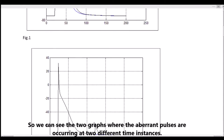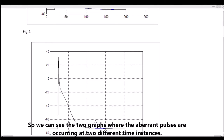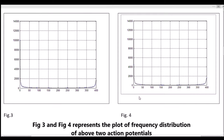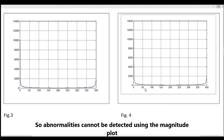We can see the two graphs where the aberrant pulses are occurring at two different time instants. Figures 3 and 4 represent a plot of the frequency distribution of the above two action potentials. As it is seen, there is hardly any perceptible difference between the frequency spectra so far as magnitude is concerned. So, abnormalities cannot be detected using the magnitude plot.